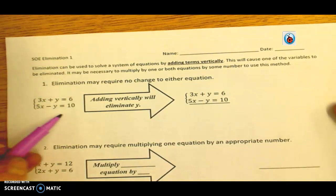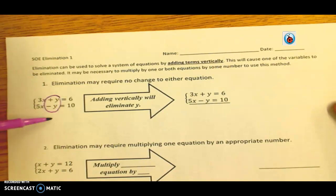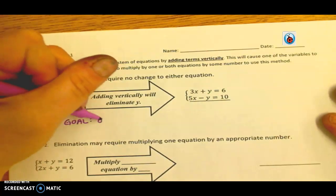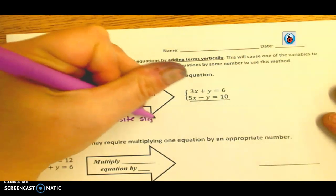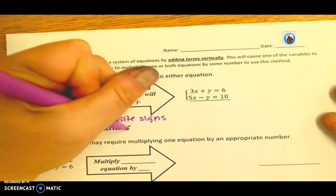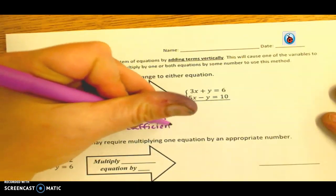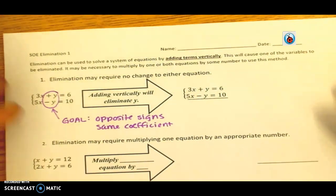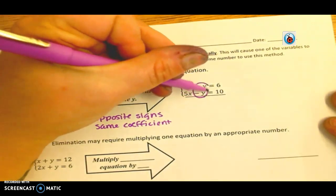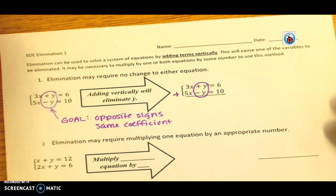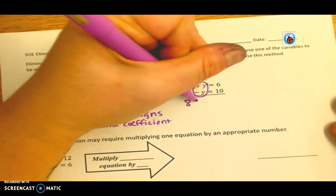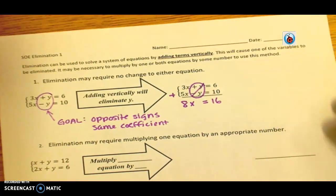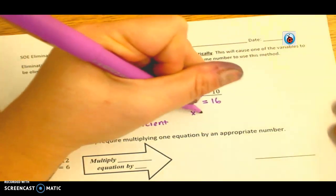Adding the two equations together to try to eliminate a variable. So sometimes there's no change. If we just go ahead and add them vertically, we can see that our goal is that we want to have opposites. So our goal is to have opposite signs, same coefficient for one variable. So opposite signs, same coefficient, so that way when we add them together, they will cancel out. Okay? So in this case here, a positive y, we're going to go ahead and add everything. I like to put the plus sign just to kind of keep it fresh from what I'm doing. So I'm going to have 8x. That's going to cancel out because they're opposites. Equals 16.